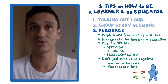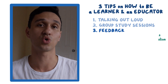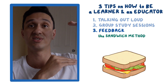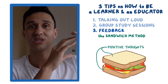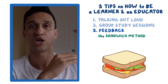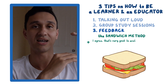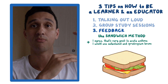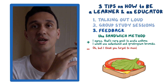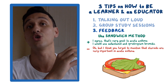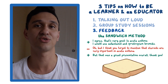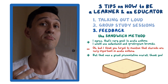One method I like to use is what I call the sandwich method. Imagine a sandwich with bread on top, content in the middle, and bread on the bottom. The bread represents positive things about what they've said, and the middle part is the correction you want to make. For example, if someone presented on asthma, you'd start: 'I agree, that's very good — in acute asthma I would use salbutamol and ipratropium bromide.' Then give the constructive feedback: 'But I think you forgot to mention that steroids are very important in acute asthma.' And end with: 'But that was a great presentation overall, thank you for sharing.' This way, it doesn't just give all the negatives, but also highlights the positives.